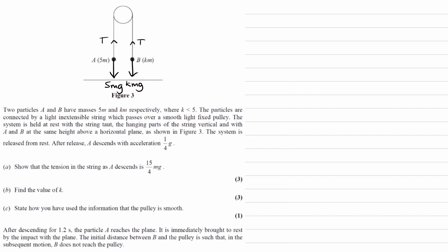The system is released from rest, and A descends with an acceleration of 1/4g. So the acceleration of A is 1/4g, and therefore the acceleration of B upwards would also be 1/4g. And there is our force diagram.